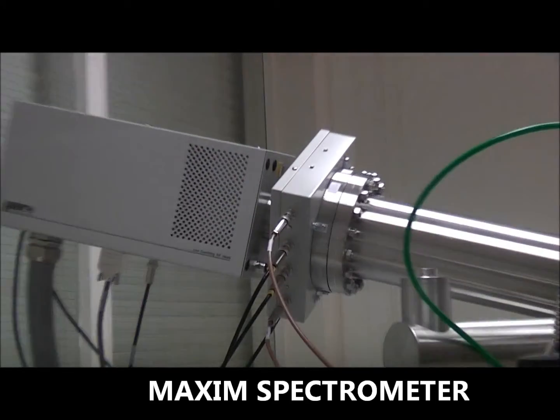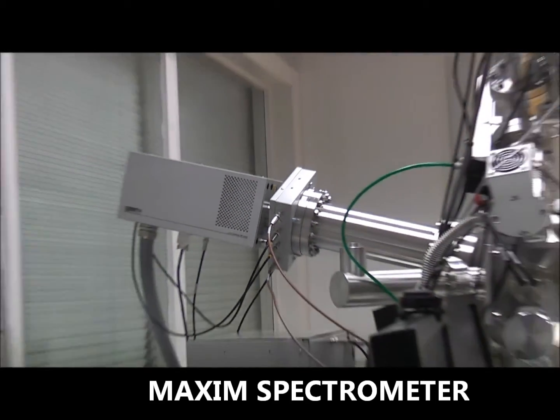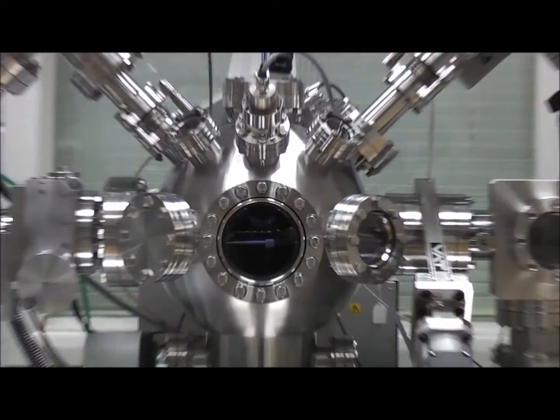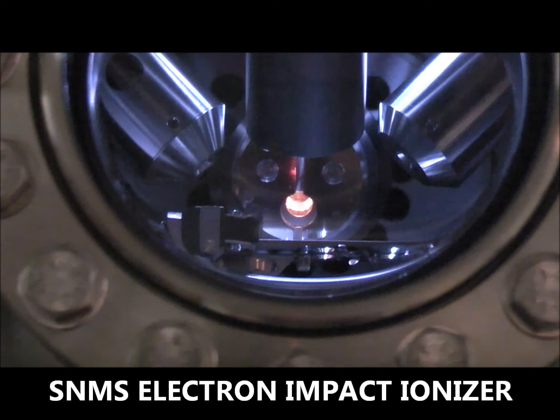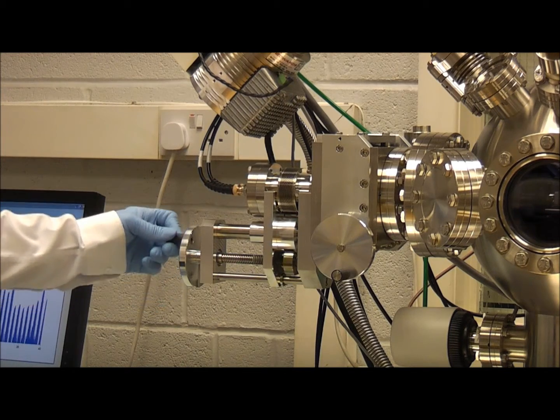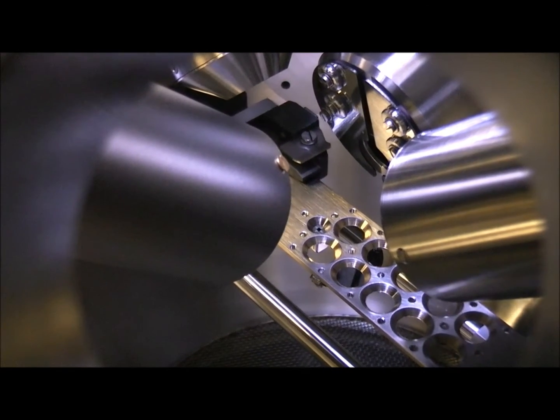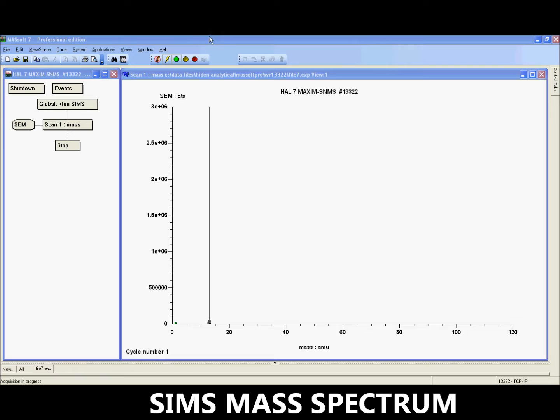The sensitive MAXIM quadrupole mass spectrometer is at the heart of the instrument, detecting positive and negative ions, with an ionizer permitting detection of neutral species. Samples are translated in X and Y directions, thus always maintaining the optimum sampling distance.